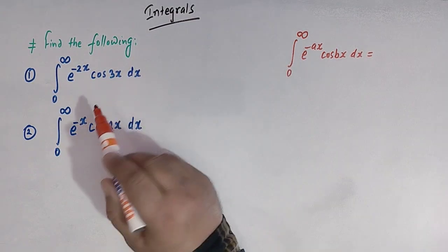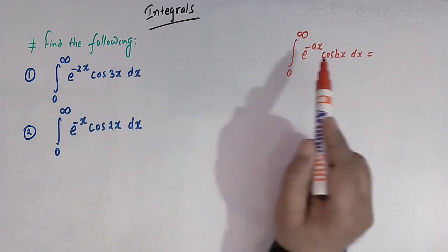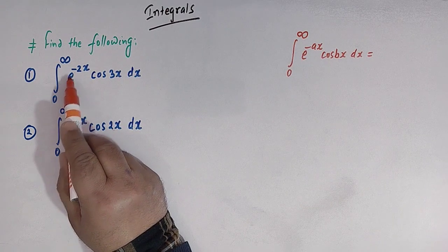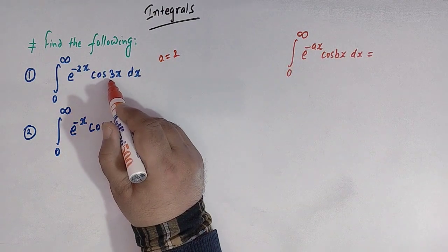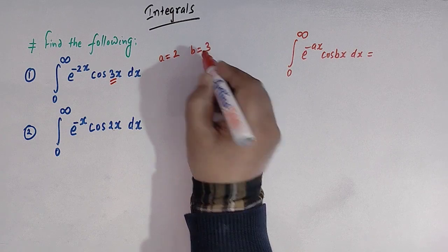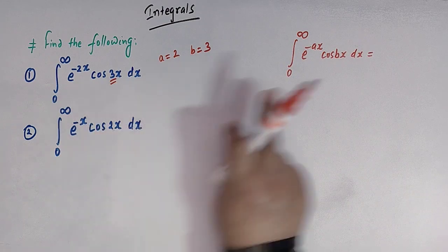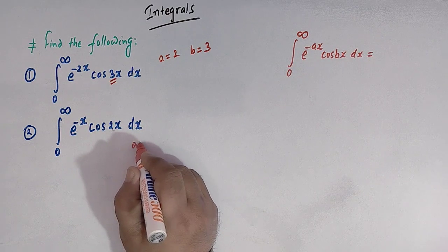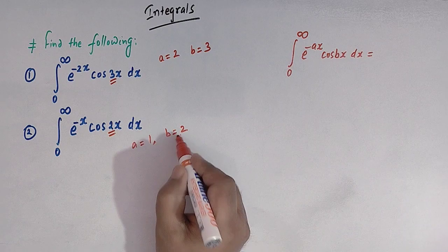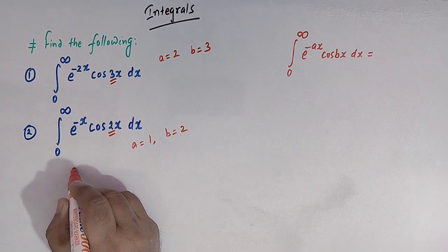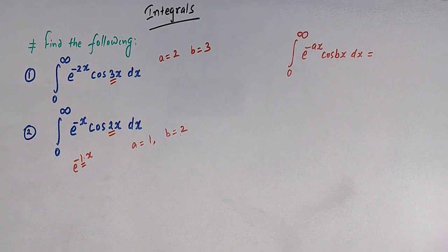Comparing the first integral with the general form, we can see that the value of a is 2, since we have e raised to minus 2x, and the value of b is equal to 3. Similarly, comparing the second integral, we have a equal to 1 and b equal to 2, because e raised to minus x can be written as e raised to minus 1 times x, so the value of a is 1.